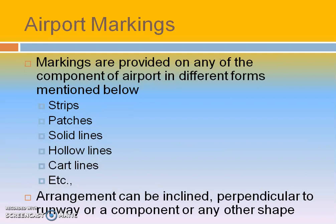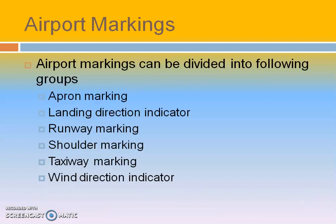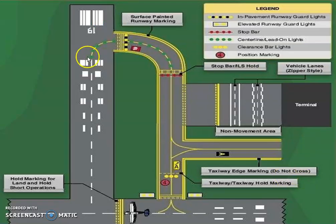Coming to airport marking: markings are provided in all the components of the airport by means of strips, patches, solid lines, hollow lines, or cart lines. The arrangements may be either straight, inclined, or perpendicular to the runway. In the airport, markings are applied at the apron, runway, shoulders, taxiway, wind direction indicator, and landing indicator. In the picture, this is the runway — the number marked on the runway represents the direction in which the pilot has to orient their compass. This is the center line marking, threshold line marking, and edge line marking.